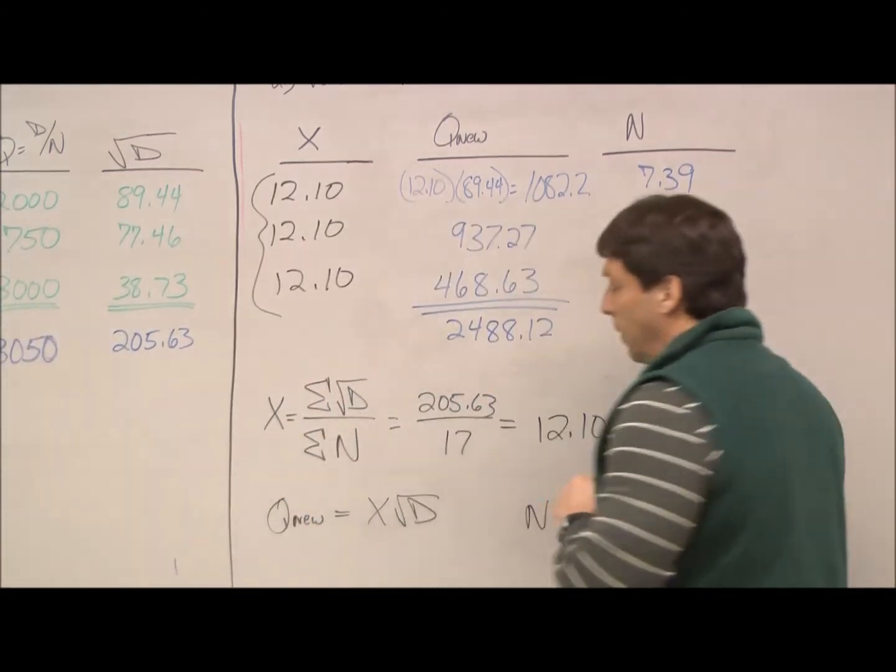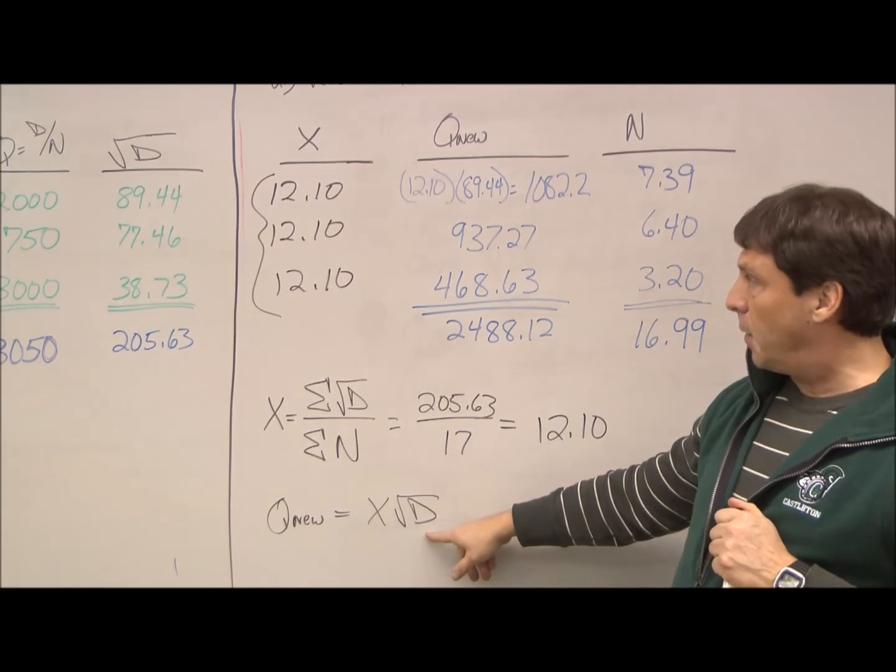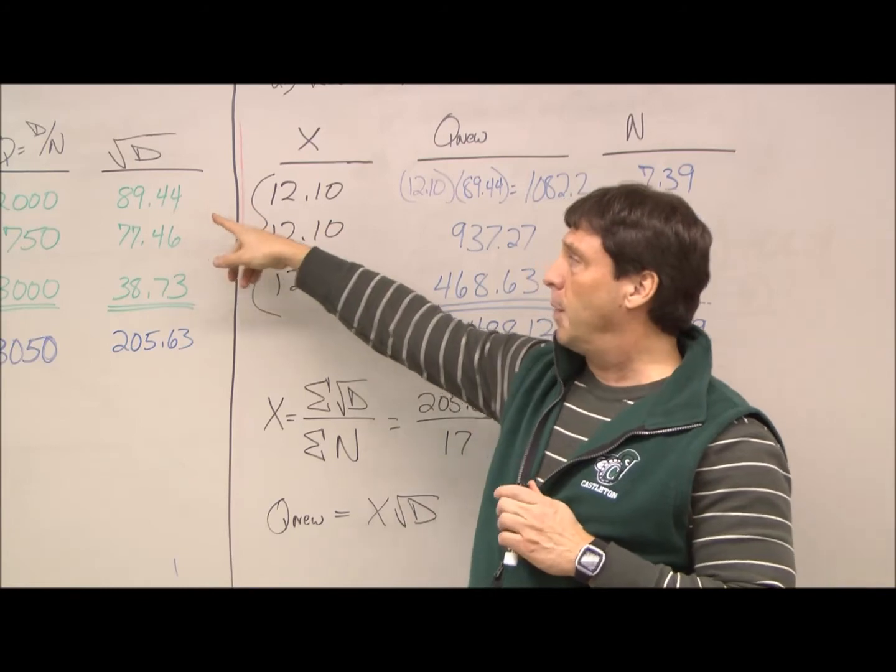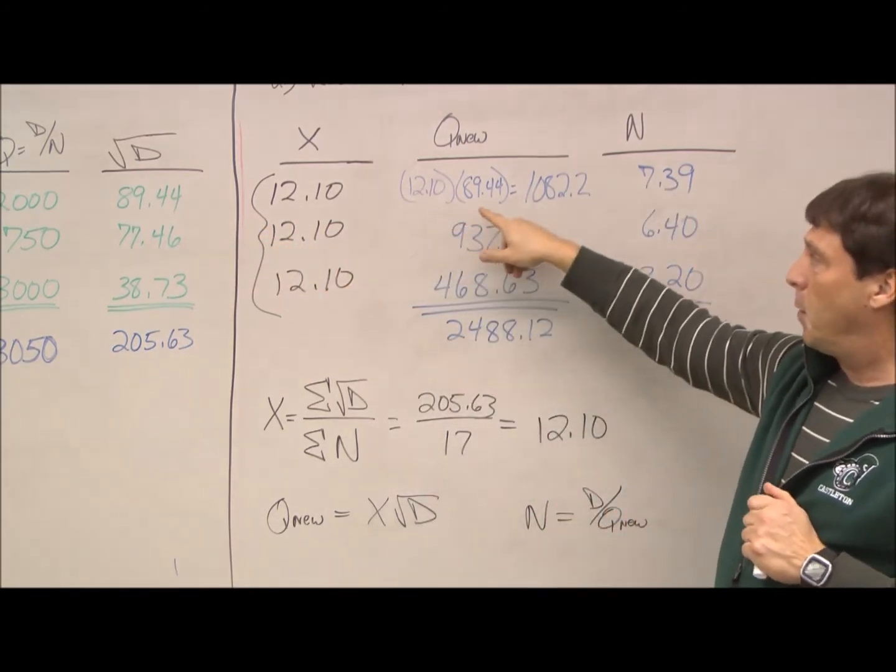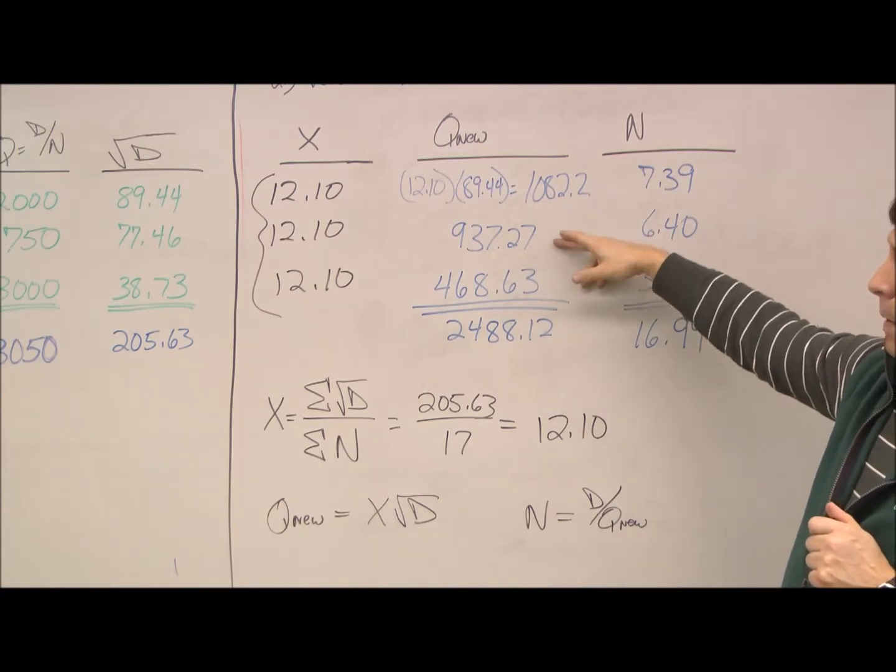Alright, from one of our equations, we know Q is X times the square root of D. So, we just figured out X. We know our square roots over here. So, 12.1 times 89 is 1082.2.